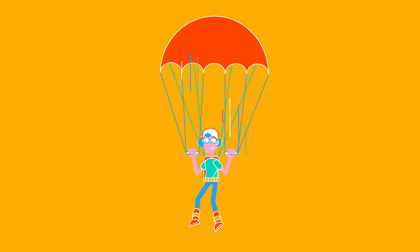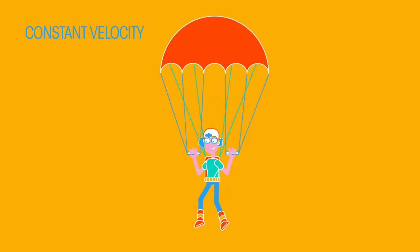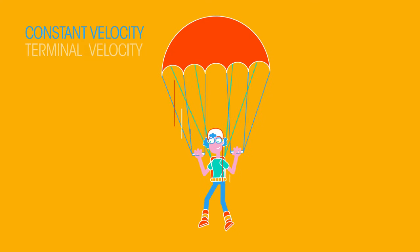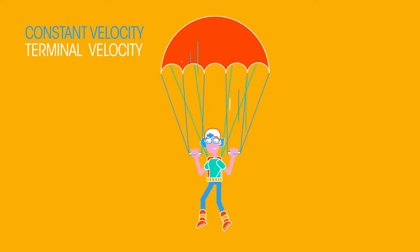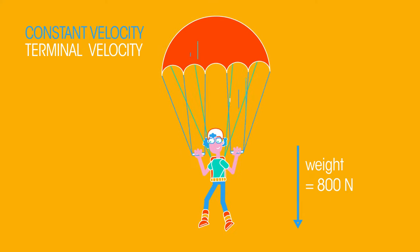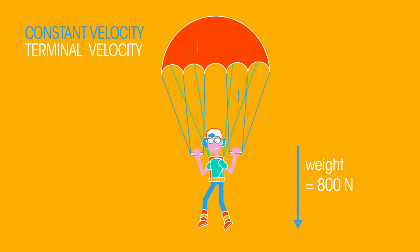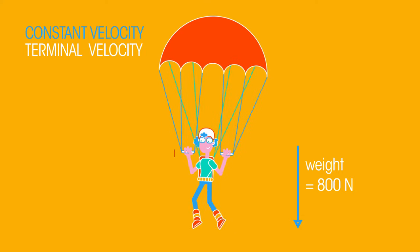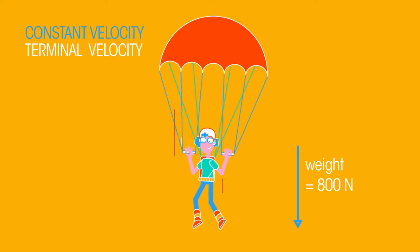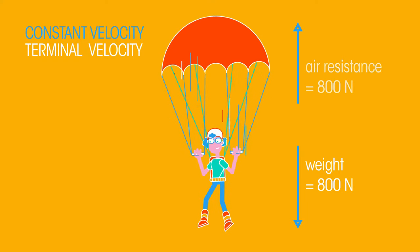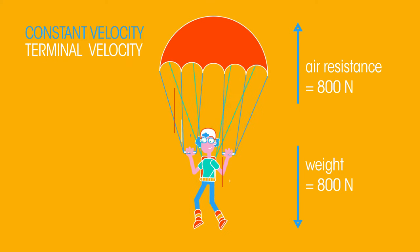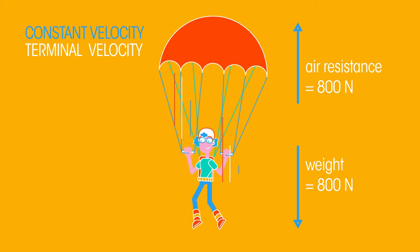This parachutist is falling through the air at a constant velocity, also known as terminal velocity. There is a force of 800 newtons acting downwards on the parachutist. This is the parachutist's weight or the force due to gravity. At the same time, the parachutist experiences an upward force of 800 newtons due to air resistance. These forces are balanced, so she will be falling at a constant velocity.